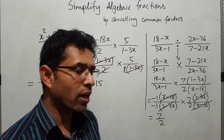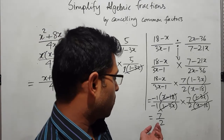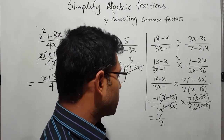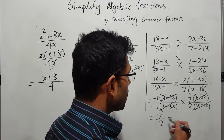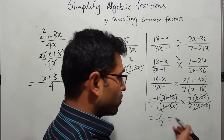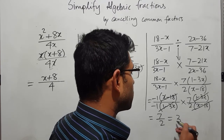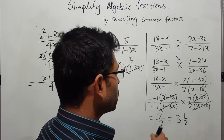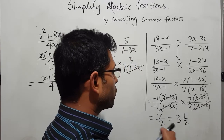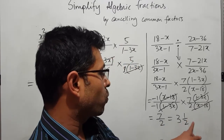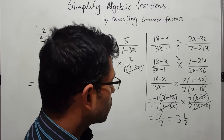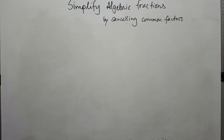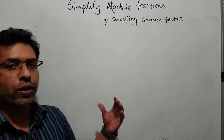We always write the answer in fractional form in algebra because the fraction form is the exact form. If you want, you can convert to a mixed number: 7 over 2 is 3 and 1 over 2, since 2 times 3 is 6 with remainder 1.